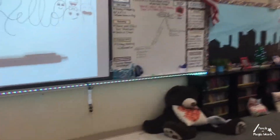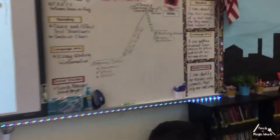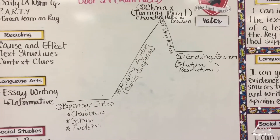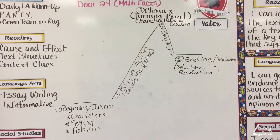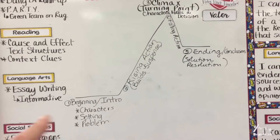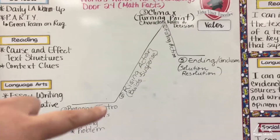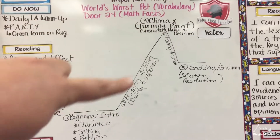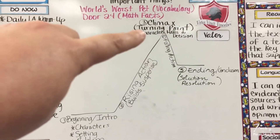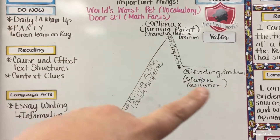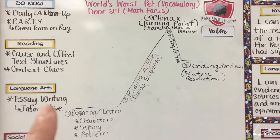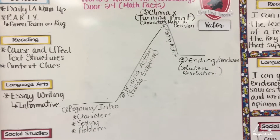Another thing that we were going over today in our reading, which was kind of impromptu — I know we're going over cause and effect — but we were looking at a science fiction story, so I decided to quickly show the kids about the story arch: how stories have an introduction where they introduce the characters, the setting, and the problem, and then they have the rising action which builds suspense, and then that leads to the climax which is the turning point where the character needs to make a decision, and then the falling action followed by the conclusion or ending which has the resolution.